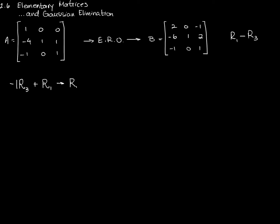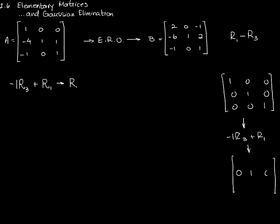If I take the 3 by 3 identity matrix and apply this same operation — subtract row 3 from row 1, written as negative R3 plus R1 — row 2 doesn't change, and row 3 doesn't change. For row 1, I get 1 minus 0, 0 minus 0, and 0 minus 1. So this gives me E1.